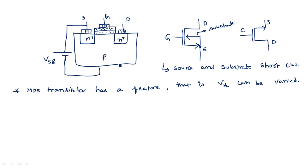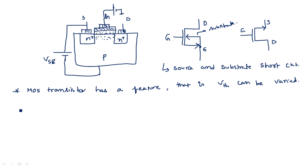When you change the substrate potential, the concentration of electrons and holes in the substrate will vary, so the charge inversion taking place between the source and drain regions will vary its potential. The input voltage applied at the gate terminal will have a changeable influence on this inversion layer, so VTH will vary.